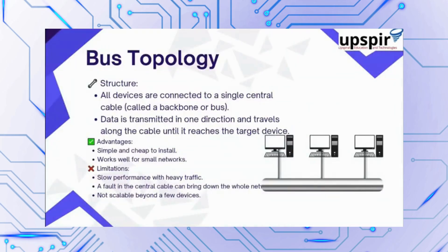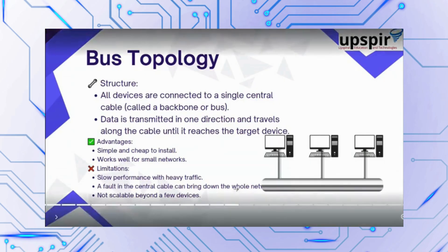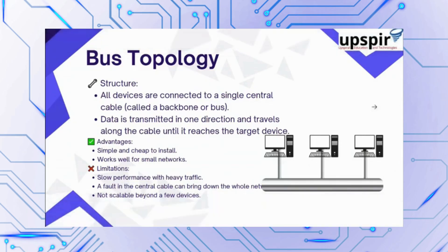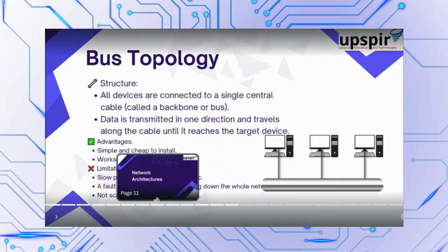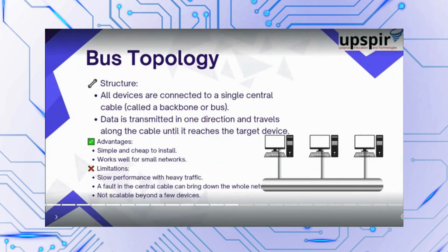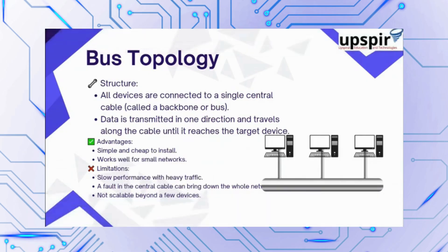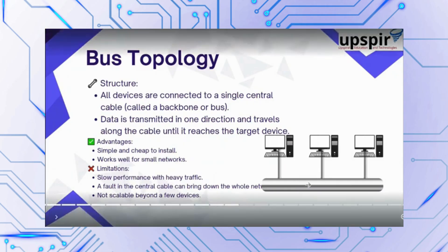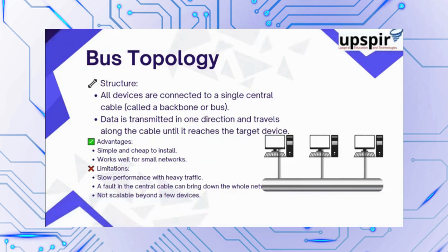Traditionally, we had something called a bus topology, where devices were connected to a central cable and data is transmitted in one direction, traveling along the cable until it reaches the target device — from left to right or right to left. It was cheap and worked well in smaller networks, but once traffic increases it had performance limitations, and any problem in the central cable would bring the entire network down. It was not scalable beyond a few devices.